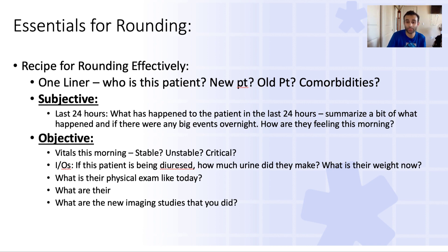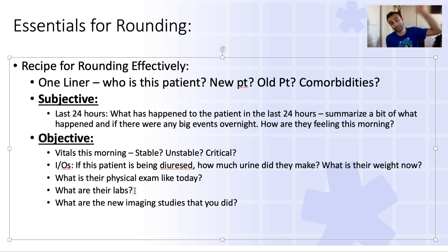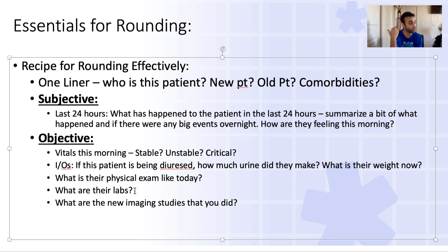Then, what are their labs doing? Did you get a CBC or BMP on them this morning? What's their potassium like? What's their sodium like? If their potassium is low, did you replete it? If their sodium is low, did you give them the fluids they might need? And lastly, did you get any imaging — an MRI, a CT scan? You have to review a lot of this data during pre-rounding so that when you're actually rounding, you have it ready to go. You want to tell the person who's listening a story, and for that you need all of these details.